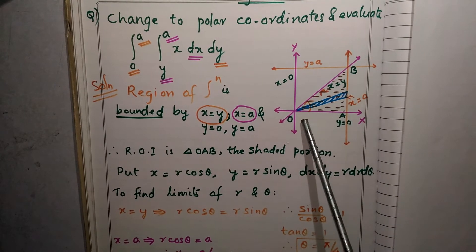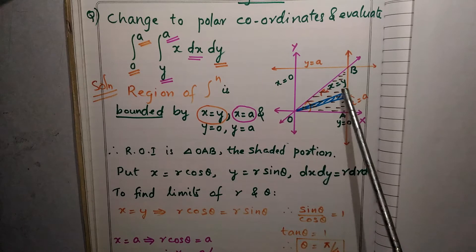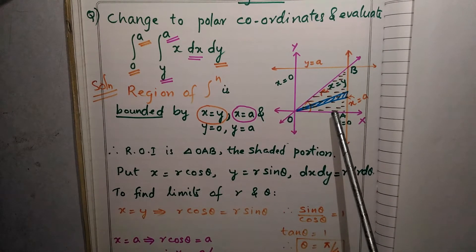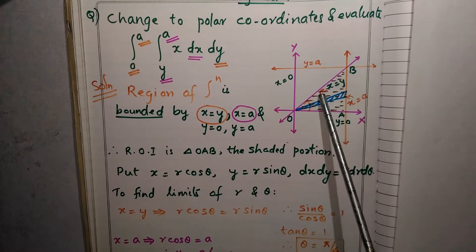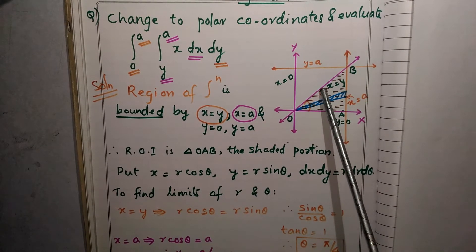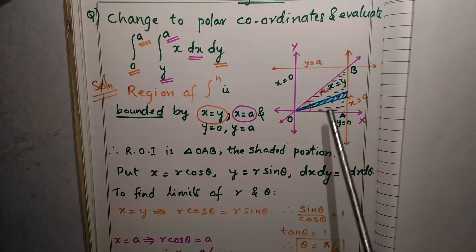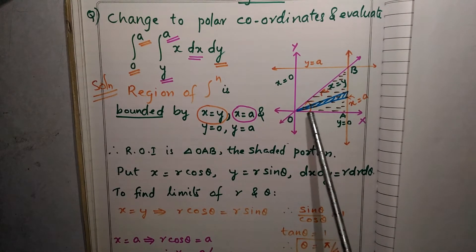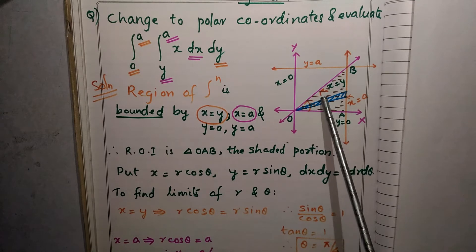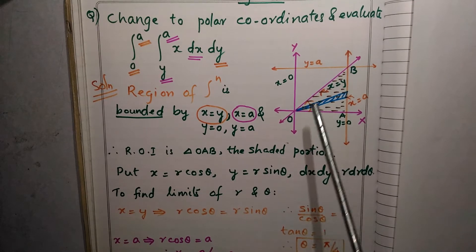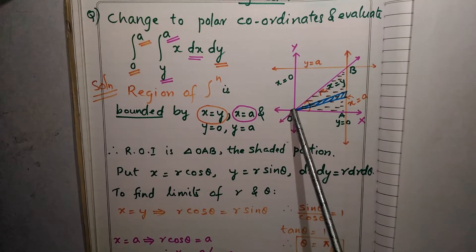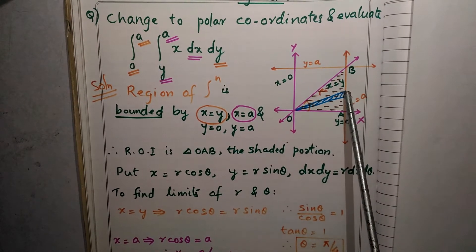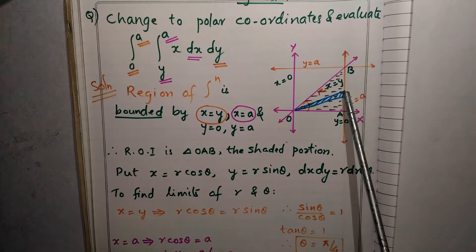Now, to get the limits, consider a small strip of this bounded region. When this strip moves from here to here, you will get the angle theta. The limits for theta are found by moving this strip from the X axis to the line Y equal to X. The initial point of this strip gives the lower limit for R, and the endpoint gives the upper limit for R.